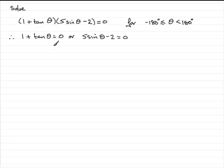And what's this going to lead to? Well in this equation if we subtract 1 from both sides we'd be left with tan θ = -1. And for this other equation if we add 2 to both sides we'd have 5 sin θ = 2, and then divide by 5 we'd have sin θ = 2/5.